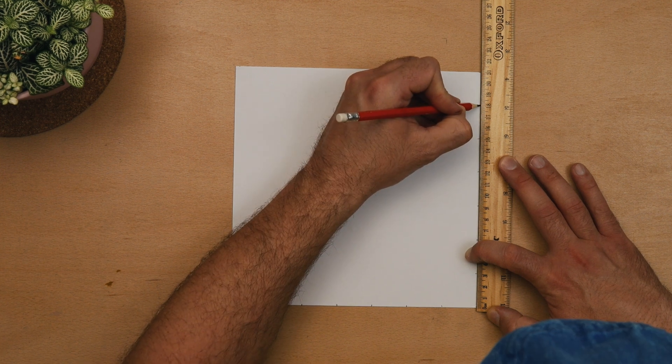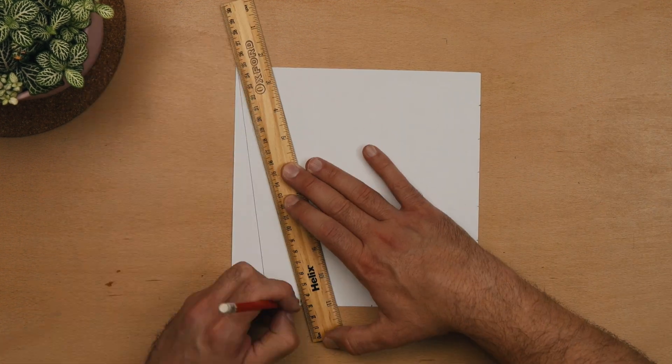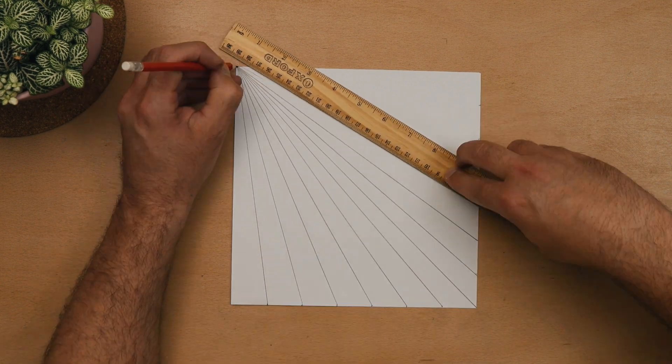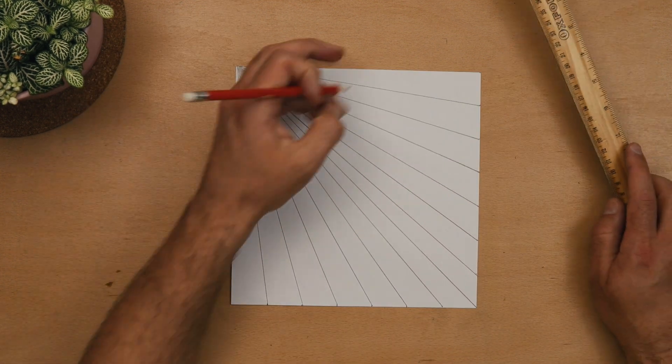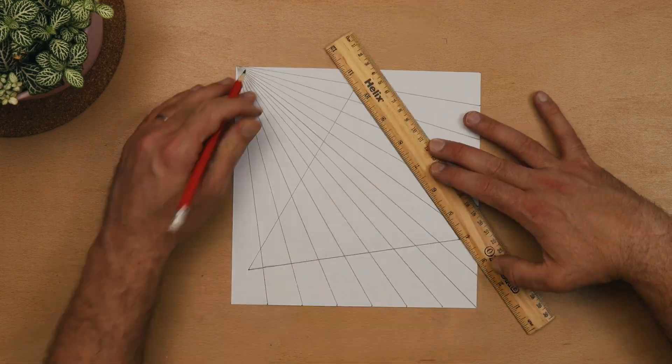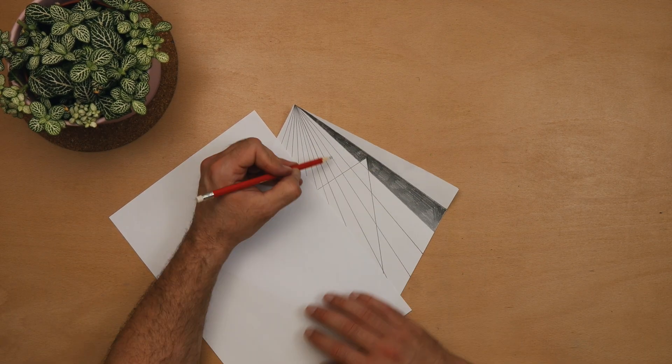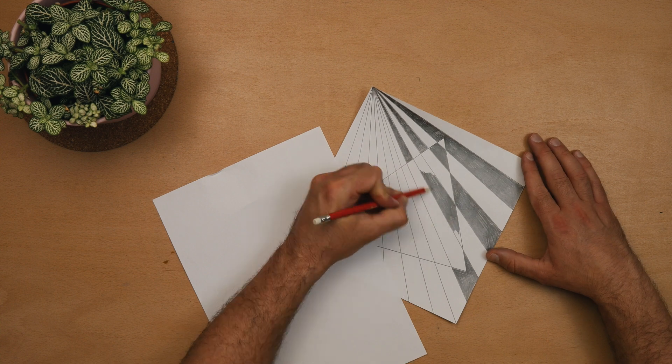Then just repeat the same process and if you really want to get them thinking then just change the size of the paper and get them to work out how to divide it accordingly.